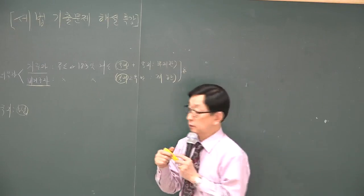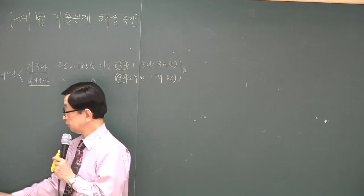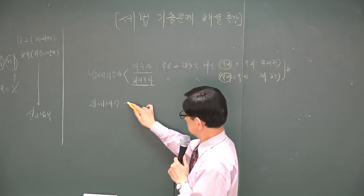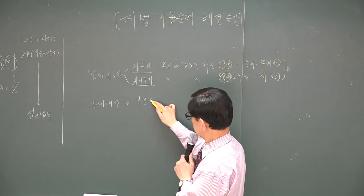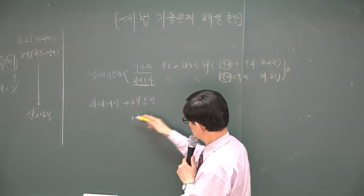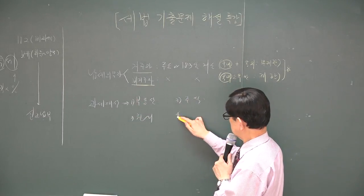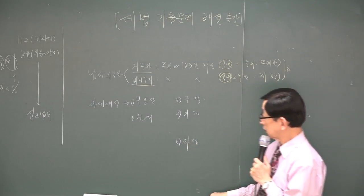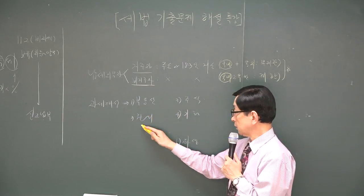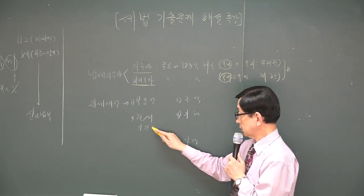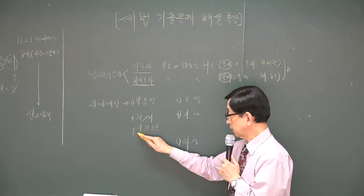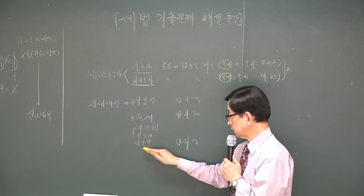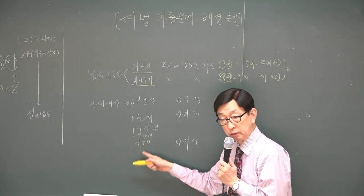2번에 나와 있는 건 과세 대상입니다. 양도세죠. 기본적으로 문제에서 과세 대상이 나왔으면 뭔지를 알고 있어야 됩니다. 첫째 부동산, 둘째 부동산에 관한 권리, 셋째 주식, 넷째 기타자산, 그리고 파생상품입니다. 부동산은 토지·건물이고, 부동산 사용 권리에는 지상권, 전세권, 등기된 임차권이 있습니다.